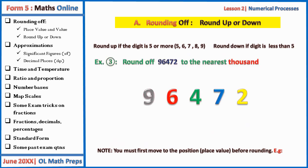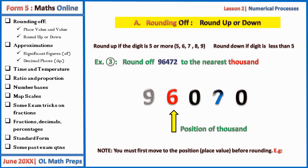Example three: round this number to the nearest thousand. The position of thousands is at six. The four after it does not affect it, so we just replace everything after the six by zeros. That gives us the nearest thousand.